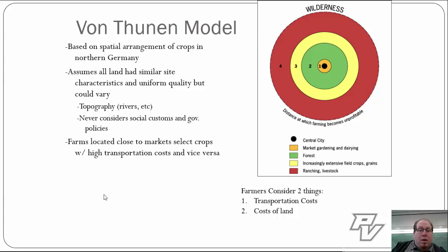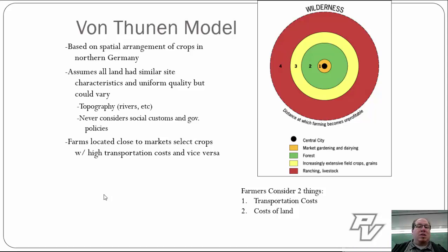The farms located closer to markets would select the crops that had the higher transportation costs. If something is relatively cheap to transport, it can be way further out. But if something is either going to spoil very quickly or is going to be a lot more expensive to transport, it's closer to the city. To the right you see another version of the model, and this is one of the fast ways I want you to try and remember von Thunen's model.